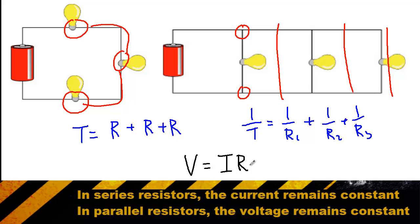In a parallel circuit, it's the exact opposite. The voltage is the same throughout the circuit, but the current changes as the charge moves through the resistor.